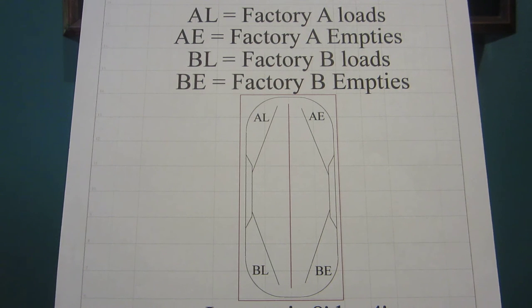Factory A has a couple of gondolas that go from the factory AL to the scrap yard for salvage AE. Factory B, BL on the drawing, has some open top hopper cars carrying gravel over to a concrete company at BE on the diagram. There are eight pieces of rolling stock on the layout. There are two gondolas with loads at AL and two empty gondolas at AE. There are two open top hoppers with loads at BL and two empty open top hoppers at BE.